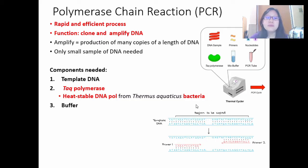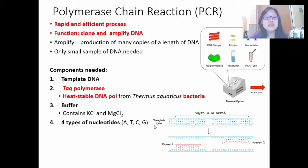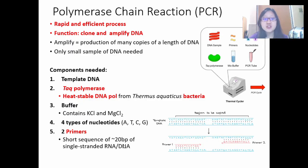Number three, buffer — we need buffer in order to maintain a stable pH. This contains potassium chloride and magnesium chloride generally. Number four, we need four types of nucleotides. Obviously, if we are copying DNA, we will need the monomers to join. So we need A, T, C, G — all four types in excess so that we have plenty to copy the DNA using PCR. Number five, we need primers. We need two primers to be exact. Primers are short sequences of 20 base pairs and they are single-stranded RNA or DNA.